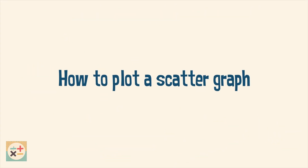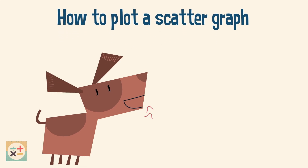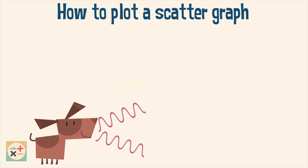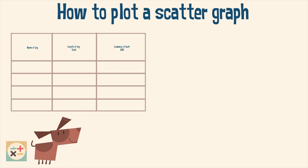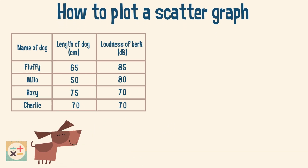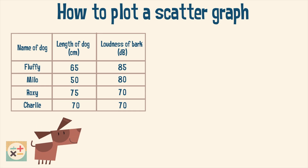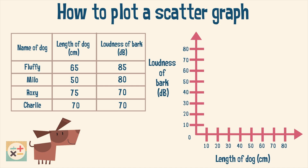So how do you plot a scatter graph? Have a look at this set of data. We are given values for the size of each dog in centimeters and the loudness of its bark in decibels. Let's first plot the values for the dog named Fluffy.